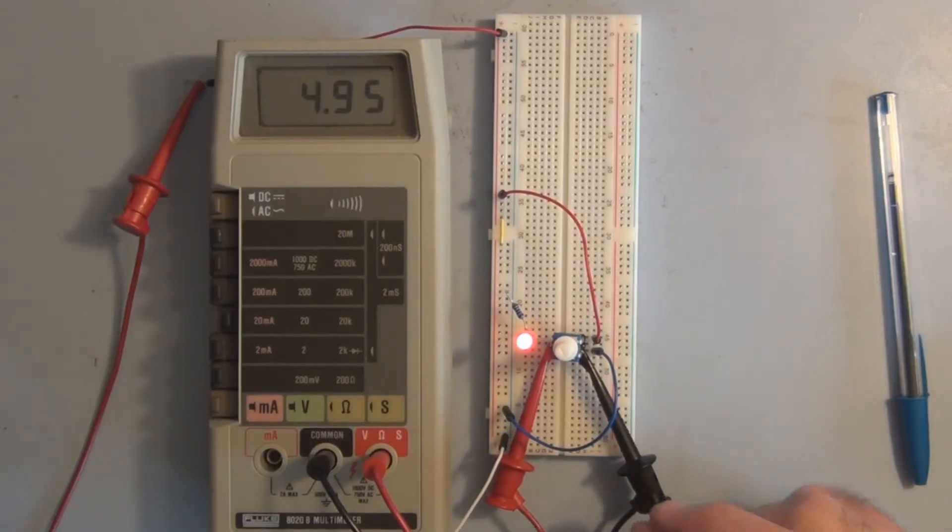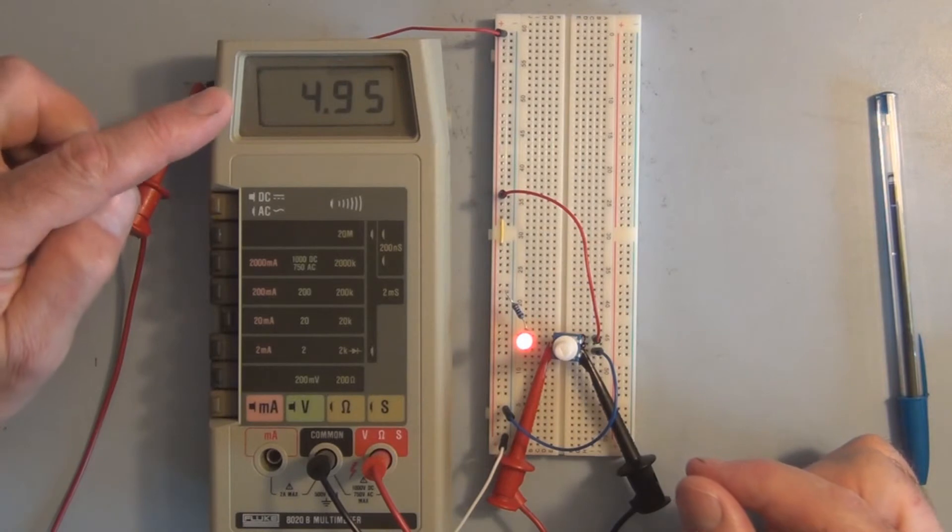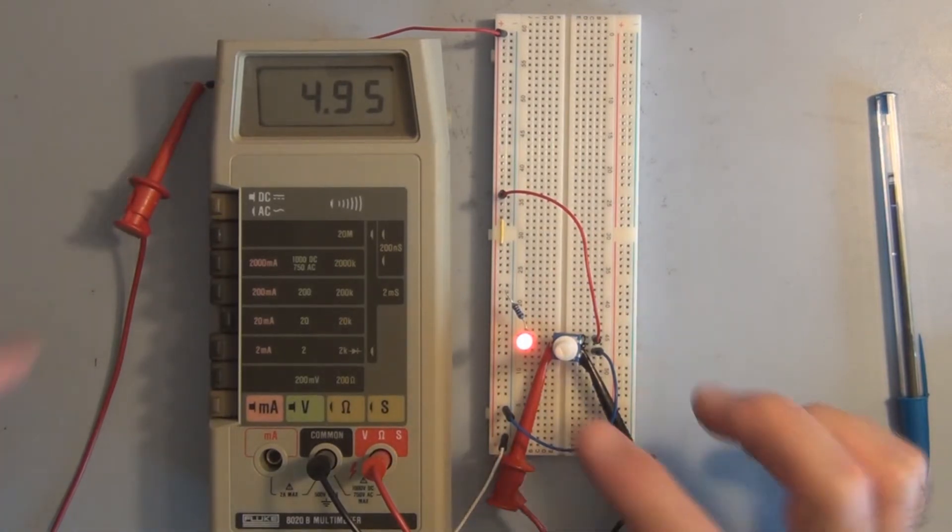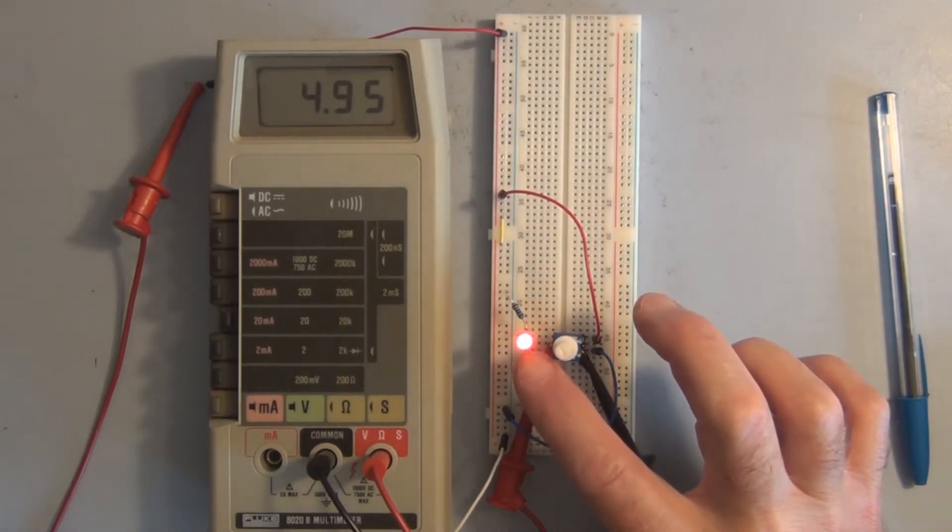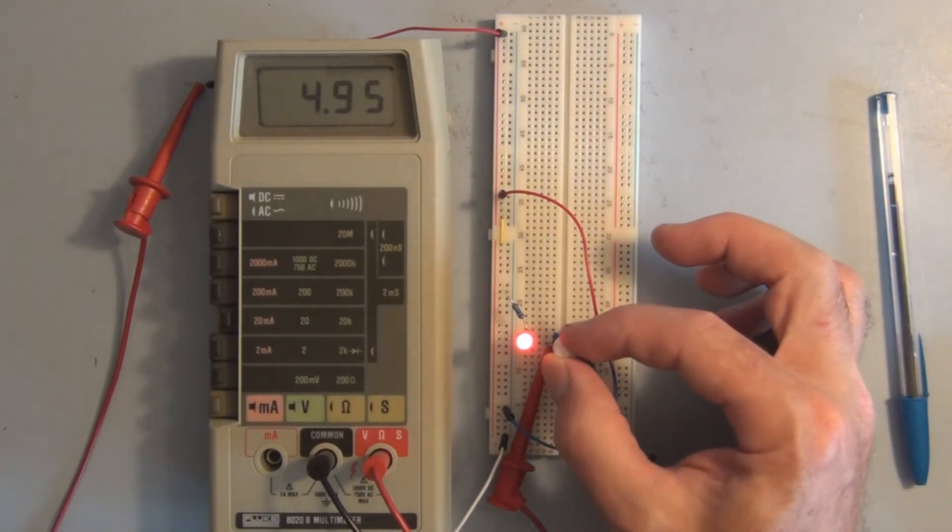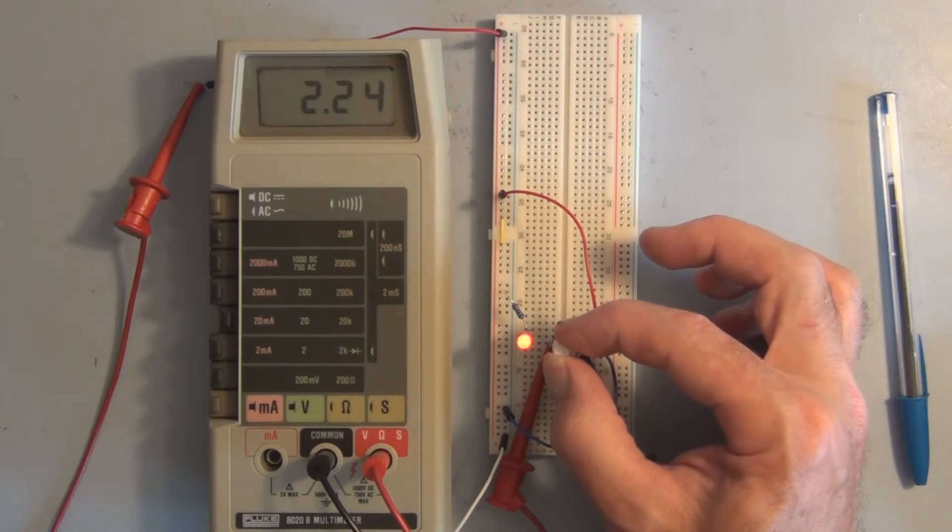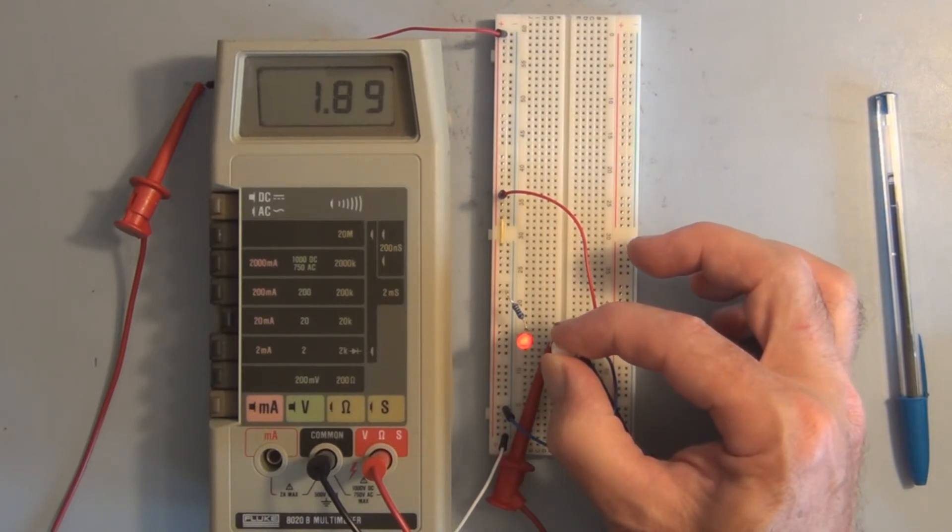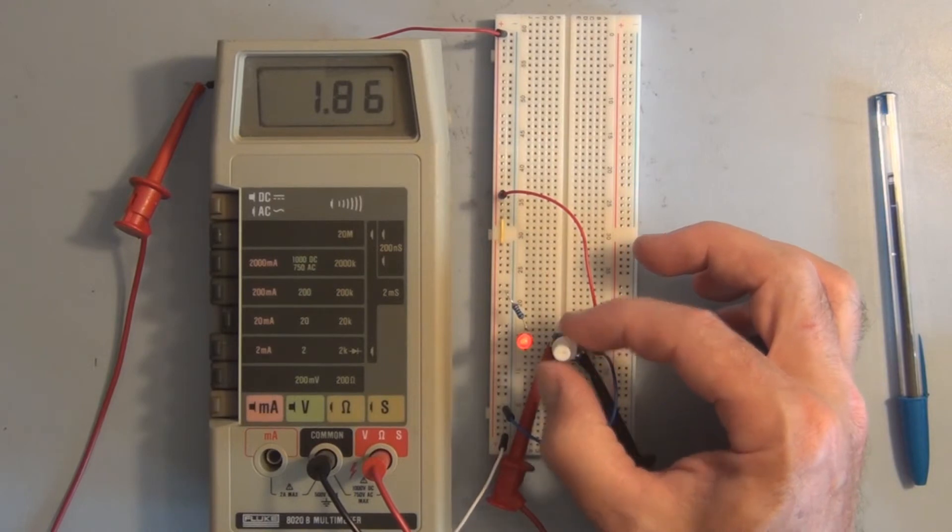So here I'm measuring the voltage on the anode of the LED, and you can see here we're at 4.95 volts, and the LED is at its brightest level. And as we vary the voltage on the anode, the LED, as we reduce the voltage, it becomes dimmer until it's barely noticeable.